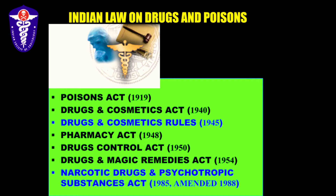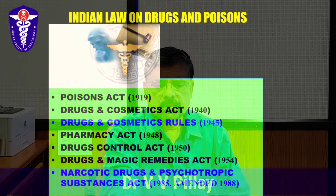We looked at the Poisons Act 1919 — not very important, it is more or less obsolete and does not apply anymore. Drugs and Cosmetics Act is an important act passed in 1940. Drugs and Cosmetics Rules is even more important — 1945. Pharmacy Act 1948, Drugs Control Act 1950, Drugs and Magic Remedies Act 1954, and of course the Narcotic Drugs and Psychotropic Substances Act 1985, amended 1988.